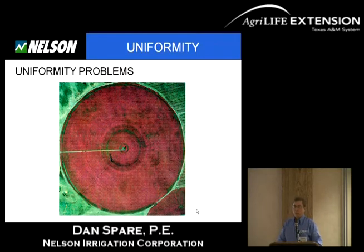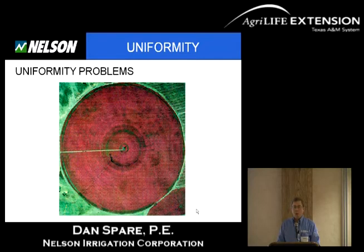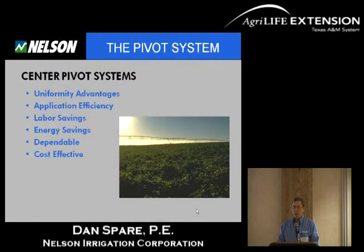Here's an example of another field — much less uniform — with significant water application problems in about the second span, and then splotches throughout the field that represent water application problems, possibly some runoff. Another example is even more problematic, with the center pivot system stopping in places, runoff, and channels throughout the field. Uniformity can be a problem, but it's not insurmountable if one plans for the issues.